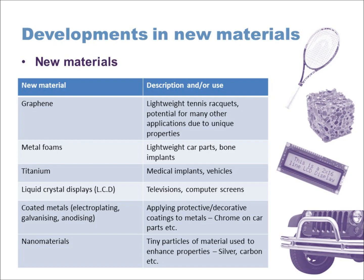Titanium is another material — it's not new, it's an element on the periodic table — but its use in products has been quite recent because titanium is very hard and very strong, making it quite difficult to work with. Like metal foams, titanium is used for medical implants because of its strength and toughness, and the fact that it won't corrode or react toxically inside the body. It's also used in vehicles like bikes and car parts, as it's stronger than steel and aluminium yet also quite lightweight.